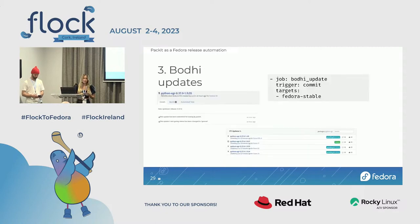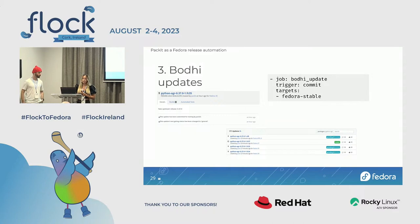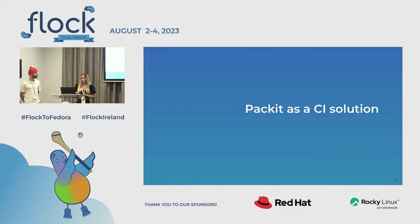There's also the Bodhi updates step — another repetitive manual step. Packit has a Bodhi update job for this. Just add the configuration snippet, and Packit will watch for a successful Koji build. Once there's a successful Koji build, Packit takes it and creates the relevant Bodhi updates for the particular Fedora release.